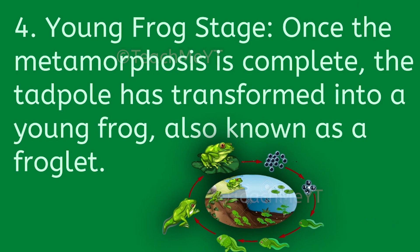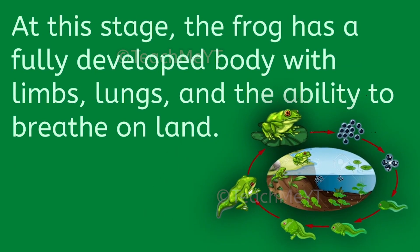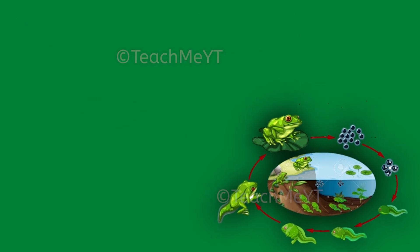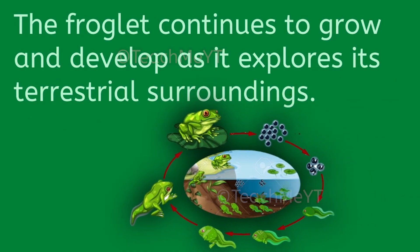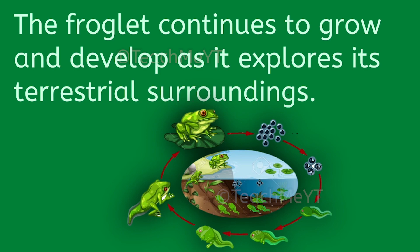Number 4: Young frog stage. Once the metamorphosis is complete, the tadpole has transformed into a young frog, also known as a froglet. At this stage, the frog has a fully developed body with limbs, lungs, and the ability to breathe on land. However, it still retains some characteristics of the tadpole, such as a relatively large head and a small body. The froglet continues to grow and develop as it explores its terrestrial surroundings.